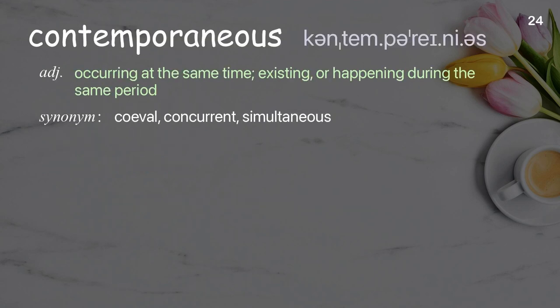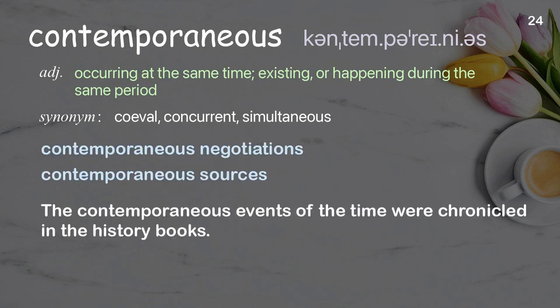Contemporaneous: occurring at the same time; existing or happening during the same period. Examples: contemporaneous negotiations, contemporaneous sources. The contemporaneous events of the time were chronicled in the history books.